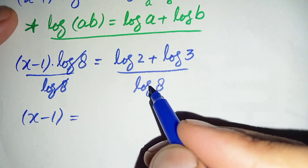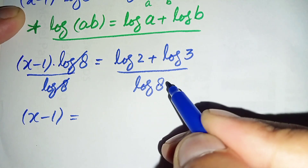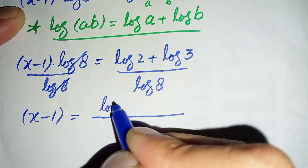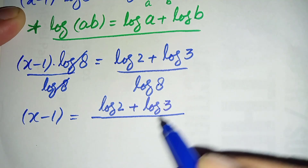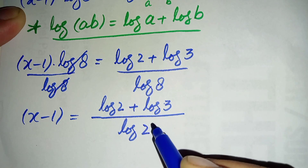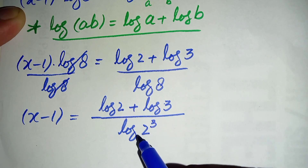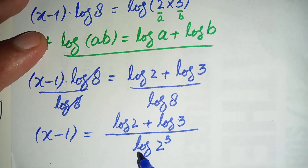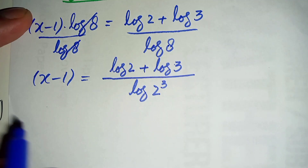On the right hand side, we change 8 to its exponential form: 8 equals 2 raised to power 3. So the equation becomes (log 2 + log 3) divided by log of 2^3. Using the power rule, the denominator becomes 3 times log of 2.